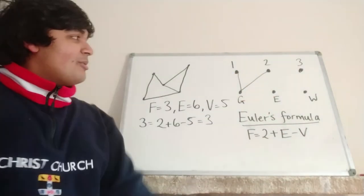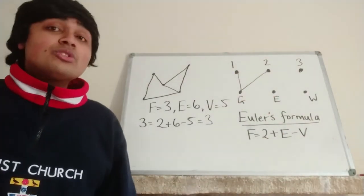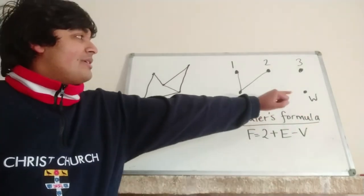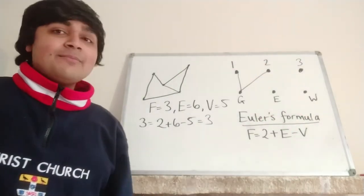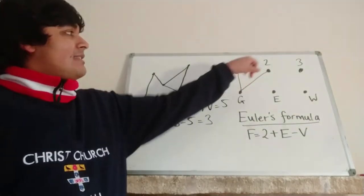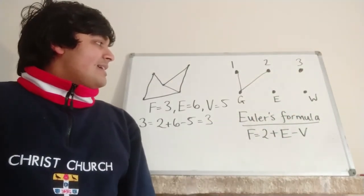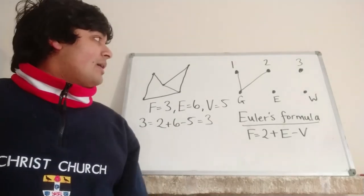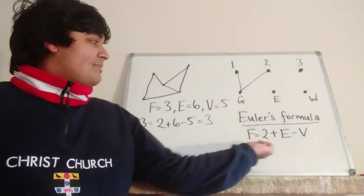Let's return to our problem about the gas, electricity, and water. Suppose we can connect each three of the utilities to each three of the houses. That means we want to build a planar graph from these three vertices here to those three vertices there. So what would it look like? Well, let's have a look.